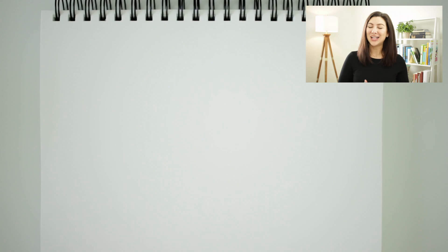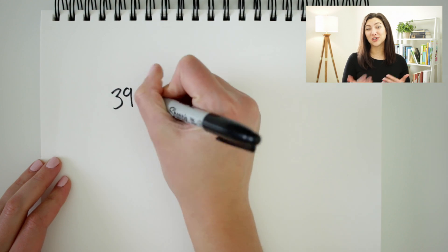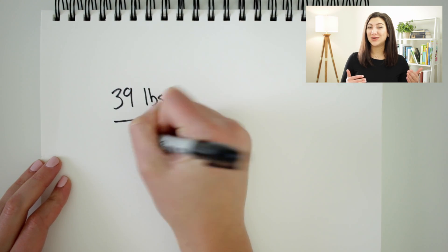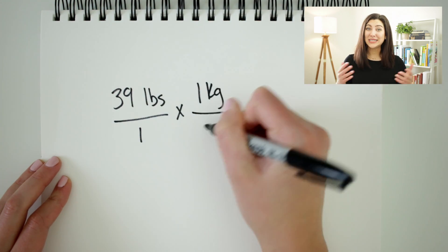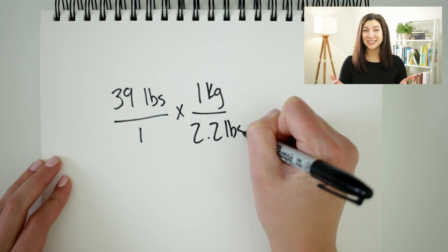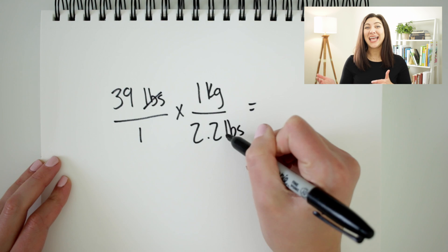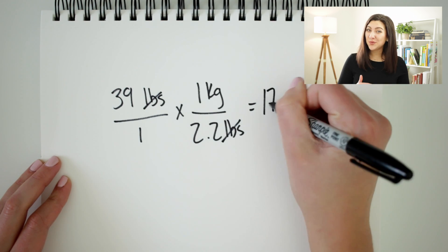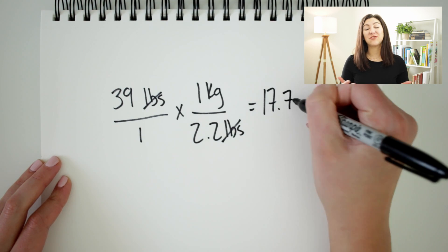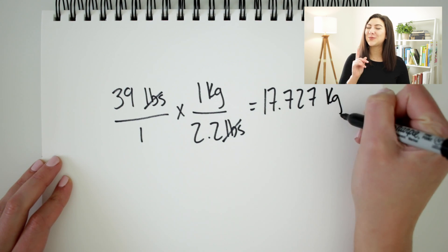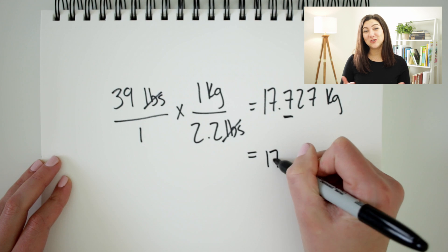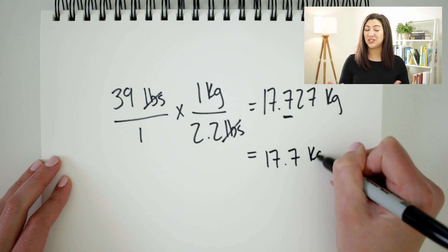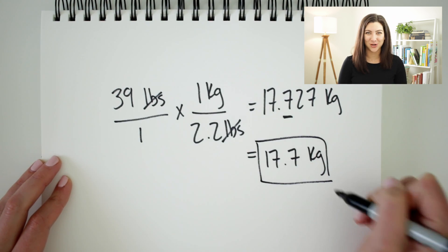This is very straightforward. We'll start with the patient's weight, then multiply by our conversion factor, make sure that our units cancel, and calculate out our patient's weight. You can see that our answer has several digits to the right of the decimal point. Thinking back to our rounding rules, we are reminded that for weights we only round to the tenth, which is one number to the right of the decimal point. So the weight we're going to use for this calculation is rounded to 17.7 kilograms.